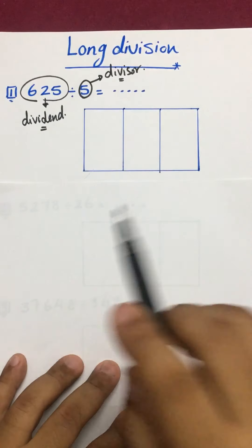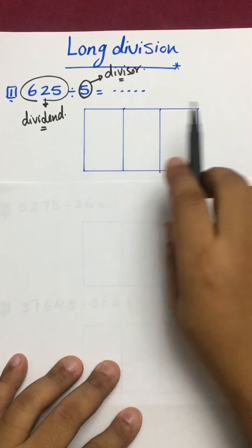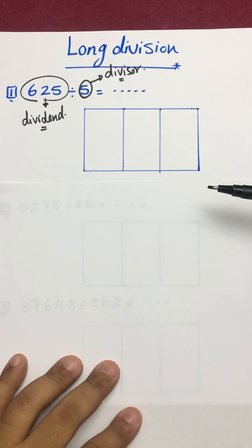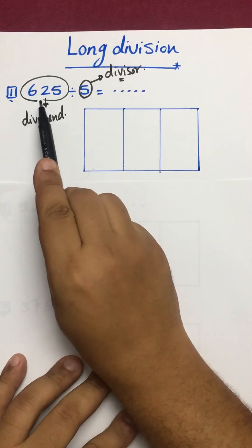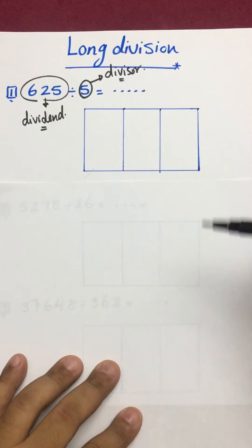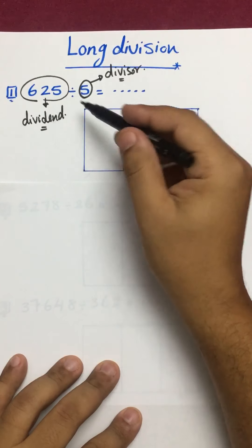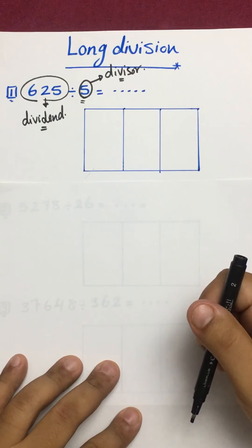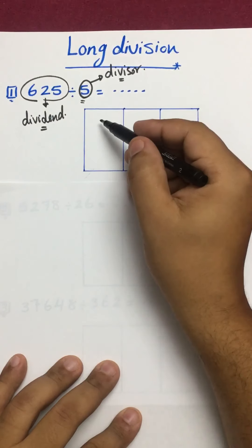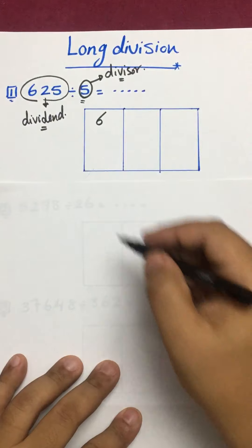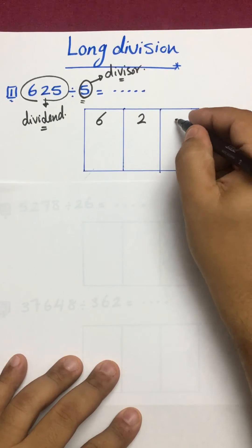Step number one: we take the dividend and place it inside the box. The box has been divided into three parts. We participate the dividend in the three parts of the box. The divisor is formed from one digit number, so in each place we put one digit number. We write 6 in the first place, 2 in the second place, and 5 in the third place.